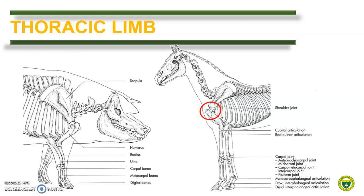Between the glenoid cavity of the scapula and the head of the humerus is the shoulder joint. The elbow joint is formed by the articulation between the humeral condyles and the radius with the olecranon process of the ulna. The carpal joint is formed by numerous articulations between the distal end of the radius and ulna with the bones of the proximal row of the carpal bones, and also by the articulations between the carpal bones via the intercarpal joints. The fetlock is found between the metacarpal and the proximal phalanx, or the metacarpo-phalangeal joint. The pastern is the proximal interphalangeal articulation, while the coffin joint is the distal interphalangeal joint.